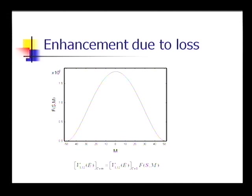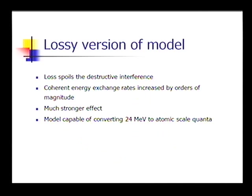And in other examples, increases by much larger factors. So the basic issue is that we now have a model that does the job. It can take a big quantum and it can chop it up into a lot of little quanta. And you can show that it can take a 24 MeV quanta and this mechanism can chop it up into atomic scale quanta. It's strong enough to do that.